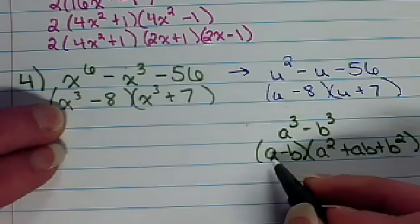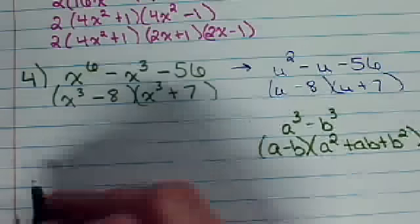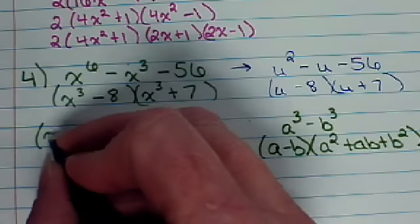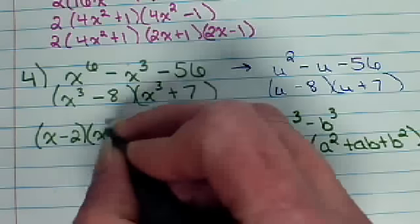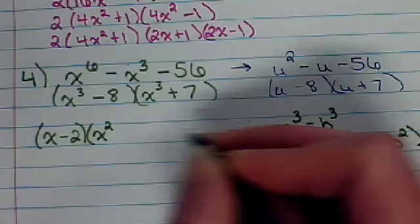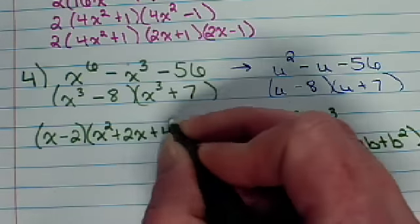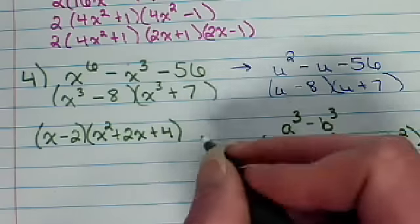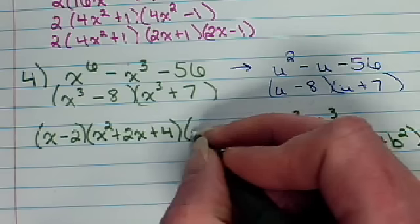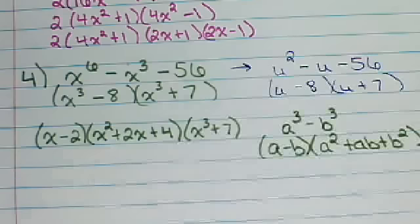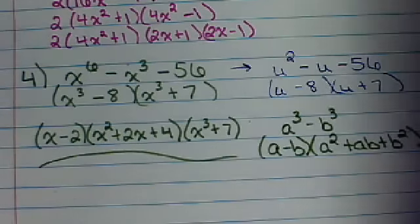And 8 is really 2 cubed. So, it's going to factor into x minus 2. The next parentheses are going to be x squared plus a times b. So, that's going to be 2x plus b squared, which is going to be 4. Now, x cubed plus 7 is not the sum of cubes because 7 is not a cube. So, I will just copy down x cubed plus 7 and we would be done.